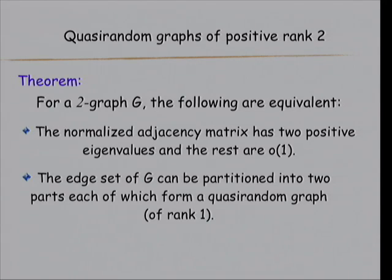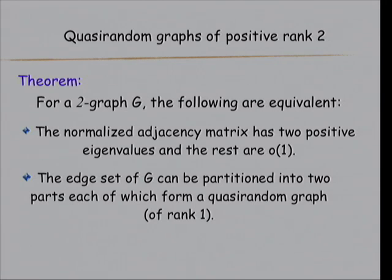I'm not going to bore you with small properties. Basically, the eigenvalues have two positive eigenvalues and the rest are all like noise. In that case, I can partition the edges into two parts, and each of them is quasi-random. Quasi-random is rank 1 — approximate rank 1, positive rank 1. I put positive here to distinguish from the bipartite case, which has a somewhat artificial rank 2.